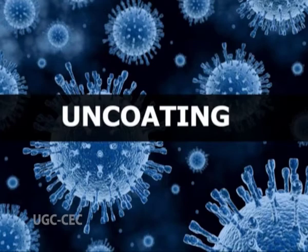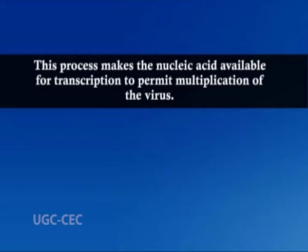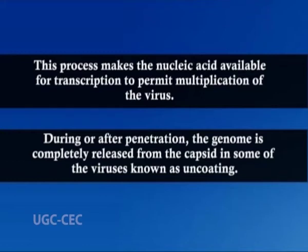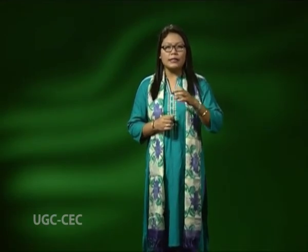Now we'll come to uncoating. This process makes the nucleic acid available for transcription to permit multiplication of the virus. During or after penetration, the genome is completely released from the capsid — this is known as uncoating. In other viruses such as retroviruses and reoviruses, the first stage of the viral replication cycle — transcription and replication — occurs inside the capsid. These capsids undergo conformational changes during infection that allow viral gene expression and replication to begin, and the resulting structures are termed partially uncoated particles.